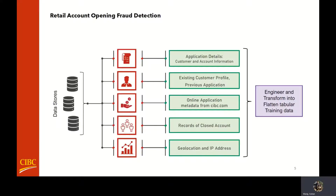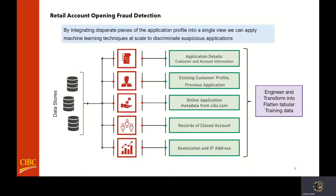The way we tackle this problem is by considering two steps. The first step is to build a single flattened view of an application at the time the application is made. We integrate several pieces of data from existing databases — we have the actual account details, such as what they're applying for and from where they're applying. If the customer is an existing client of CIBC, we have access to any potential information in the client database and can match them against their own individual profile.